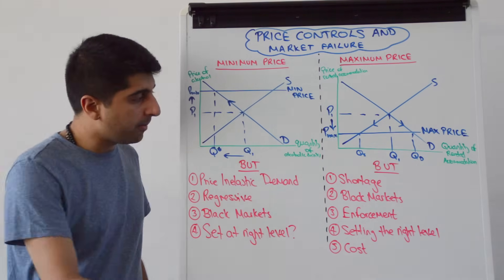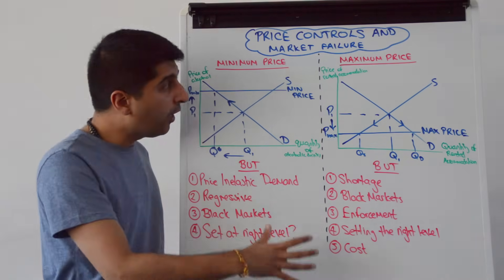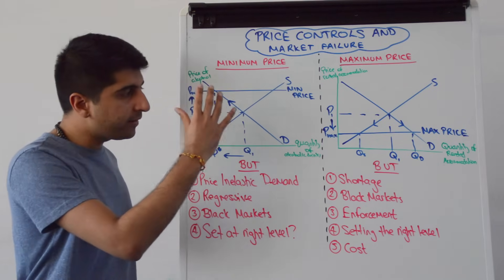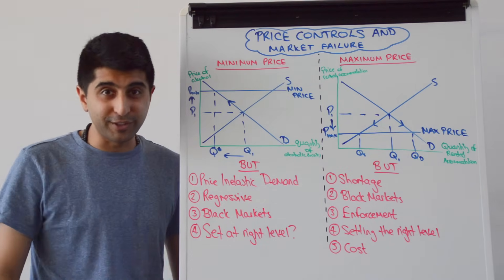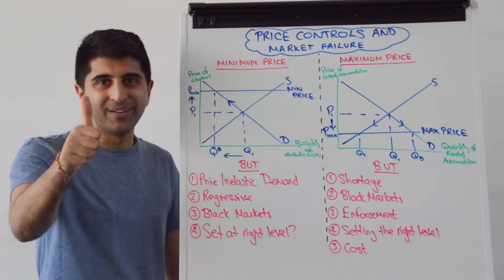These costs deal with the government's own created inefficiency, which you can argue represents large government failure. So it's not as simple as it seems — the intention is simple, but there are many issues with both minimum prices and maximum prices.